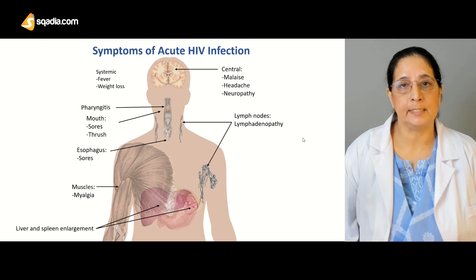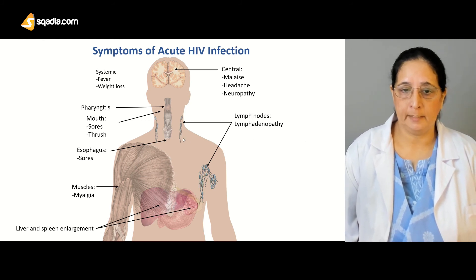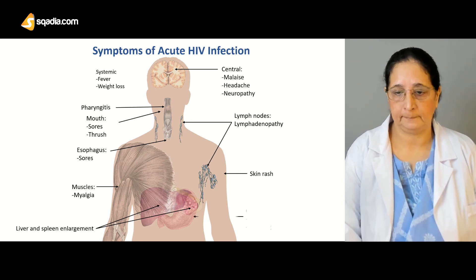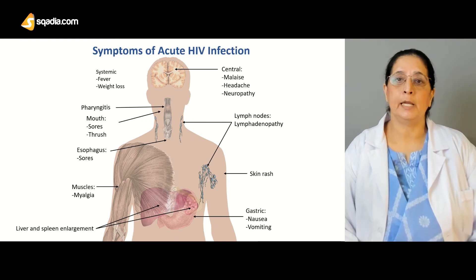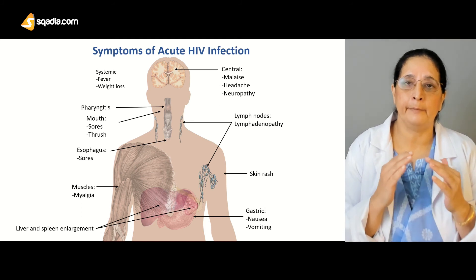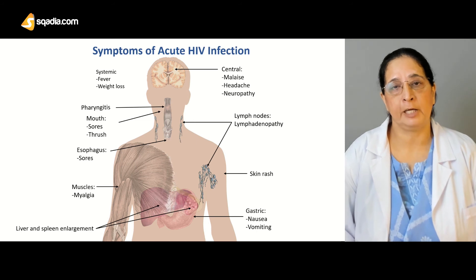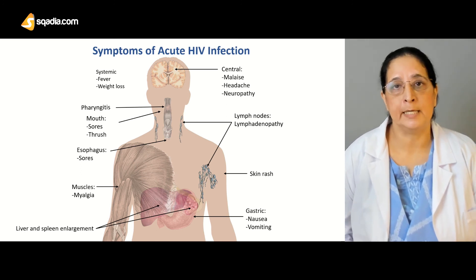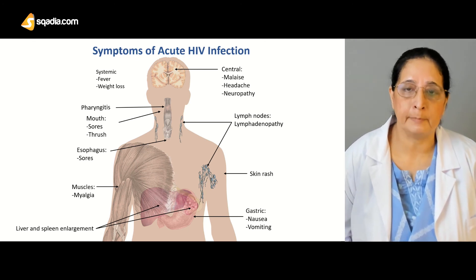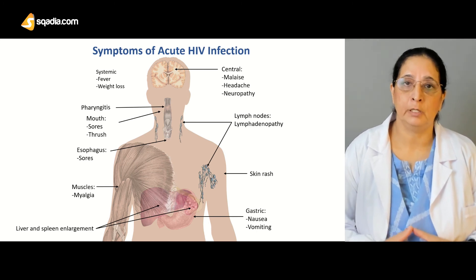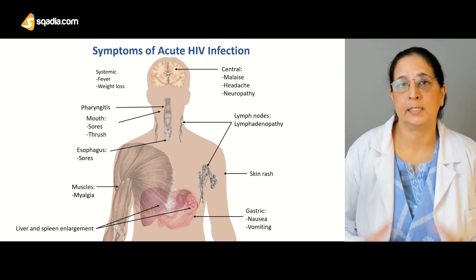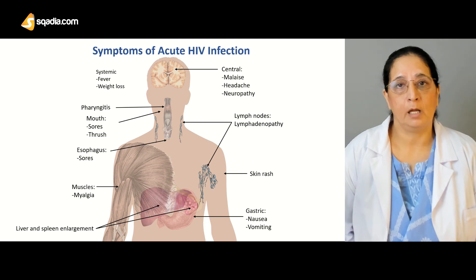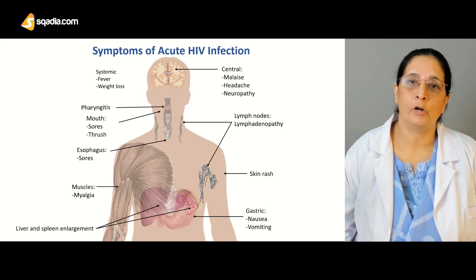Lymph node involvement is also present, leading to enlargement in the cervical and axillary regions, along with skin rash. In the stomach, nausea and vomiting occur. After the acute phase, if treatment is not done, the patient can go into a chronic asymptomatic phase that can last a very long time. Patients often don't know they have HIV because the initial symptoms resemble the common cold and flu, and they don't pay attention to myalgia, fatigue, and oral sores.